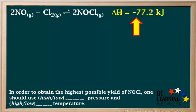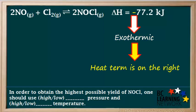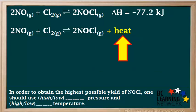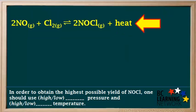When using Le Chatelier's principle, it's more convenient to express the enthalpy change, delta H, as a heat term in the equation. Because delta H is negative, we know the reaction is exothermic, so we write the heat term on the right side of the equation. We add plus 77.2 kJ on the right side, and we can simplify it further by replacing 77.2 kJ with the word heat. Now our equation is ready to start applying Le Chatelier's principle.